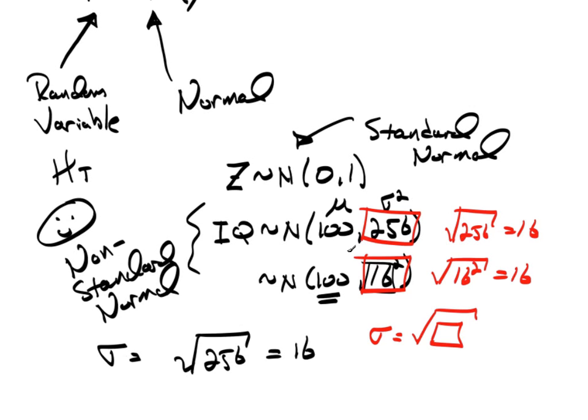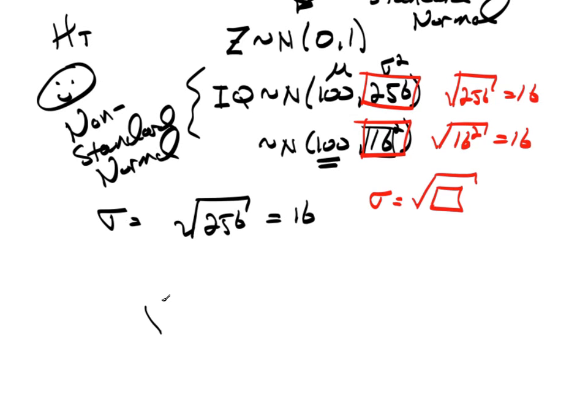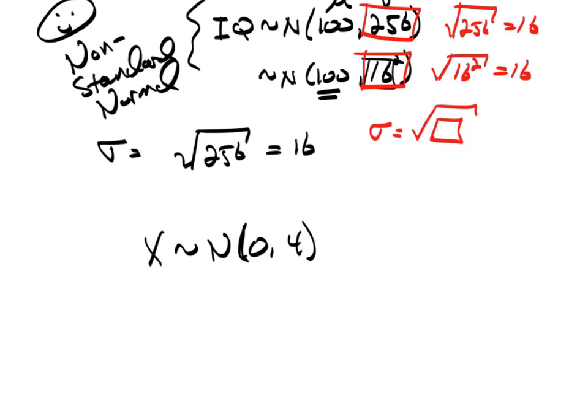Because the mean and variance are not 0-1. If I have some other distribution, I'll say X distributed normal 0, say 4. I know right away that the mean mu is 0, sigma squared equals 4. That implies the standard deviation equals 2. This is a non-standard.